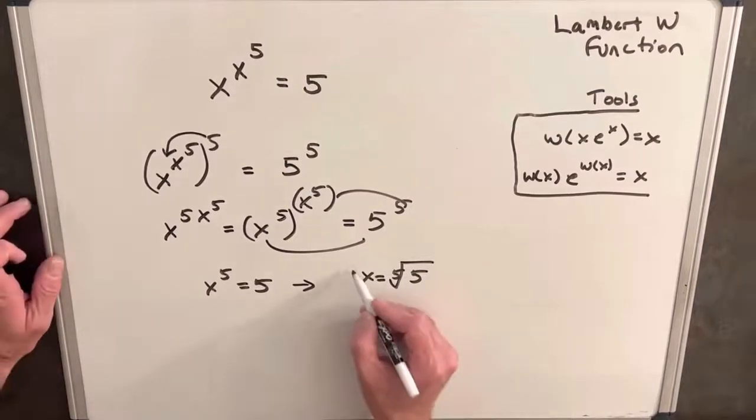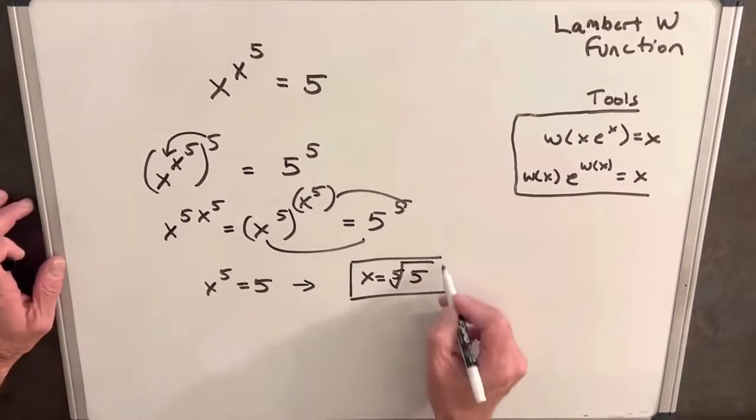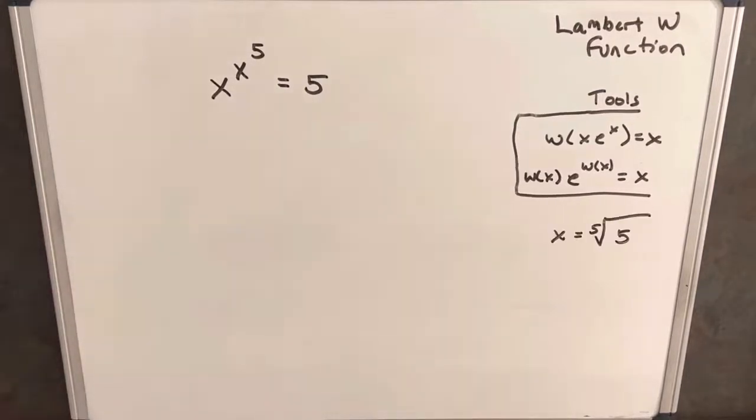And therefore we can say that x equals the fifth root of five. So this will be our answer by just algebraic manipulation. And so again in this case we don't need the Lambert W function, we were able to solve it just through algebra that we already know. But let's see if we can get the same answer using the Lambert W function.